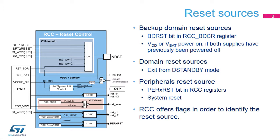The system clock can be derived from the HSI, CSI, HSE, or the output of DIVP of PLL1. The switch used to select the system clock is dynamic, meaning it is possible to change the frequency on the fly without generating timing violations. All the pre-scalers shown are also dynamic, so they can be changed on the fly, making frequency scaling very simple. The clock of CPU1 does not exceed 480 MHz. The AHB clocks do not exceed 240 MHz, as well as the CPU2 speed. The APB clocks do not exceed 120 MHz. Note that HR-TIM and certain timers can use clock frequencies up to 480 MHz.